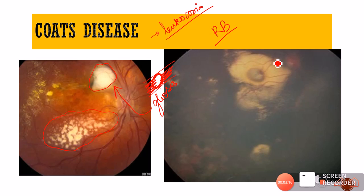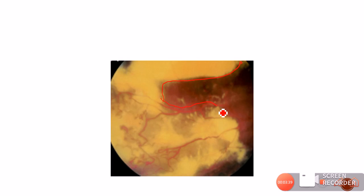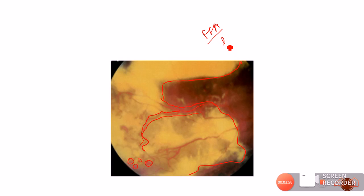In fundus images of Coats disease, you can see a large whitish area with vessels passing over it — not well-defined but quite deep — along with telangiectatic vessels. In a clearer picture, the entire yellowish-whitish area represents exudates with dilated, telangiectatic vessels and bead-like bulb aneurysms. On FFA these look like bulbs, which are very diagnostic of Coats disease. This massive sub-retinal exudation is characteristic.